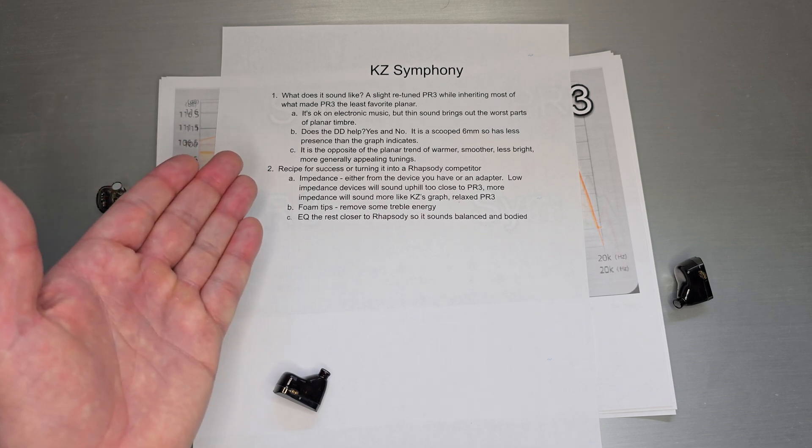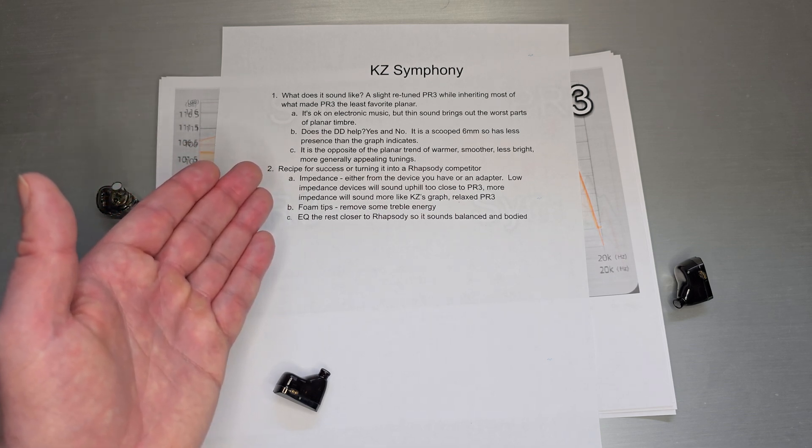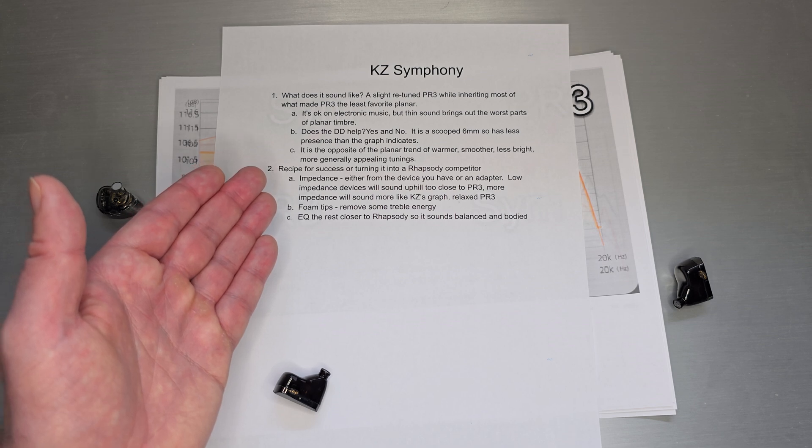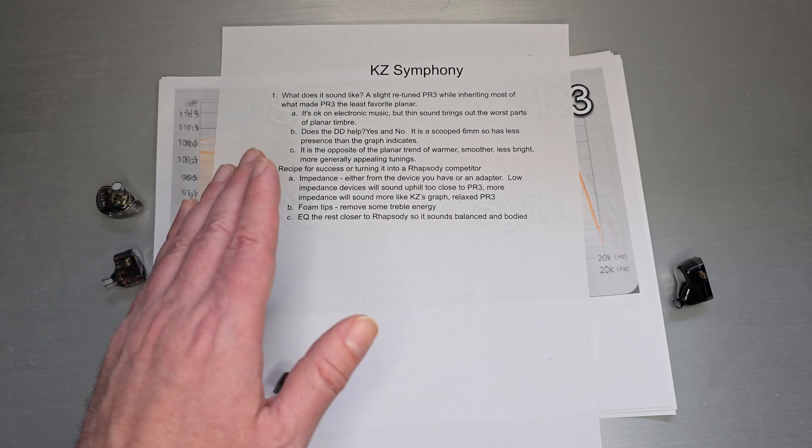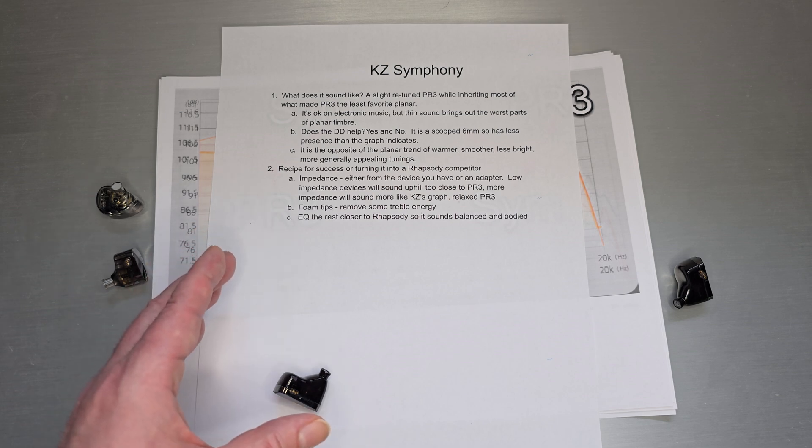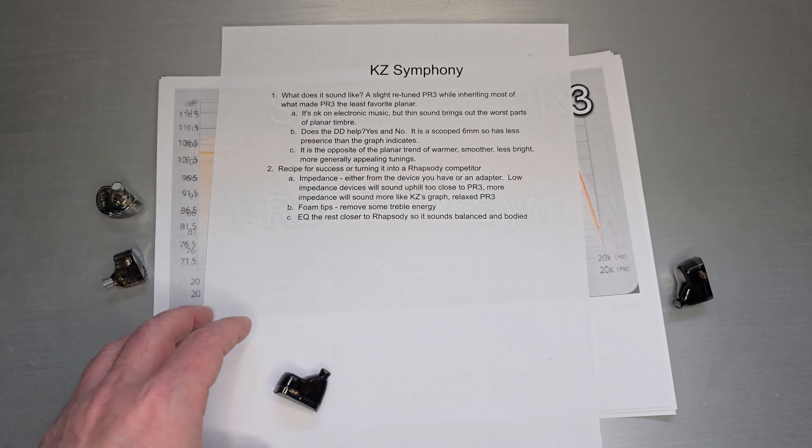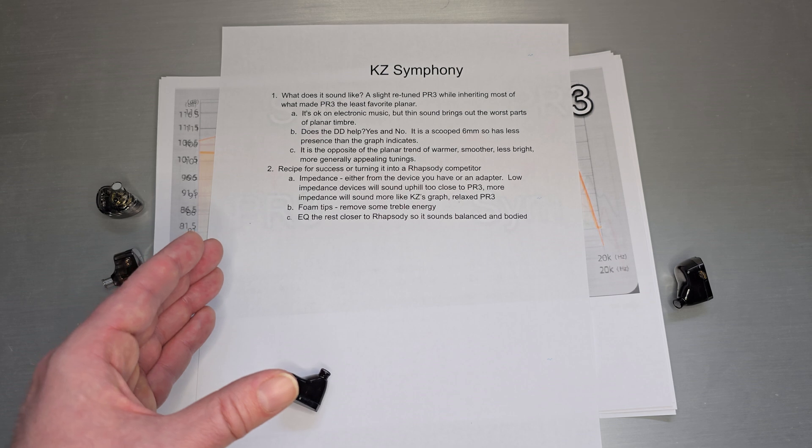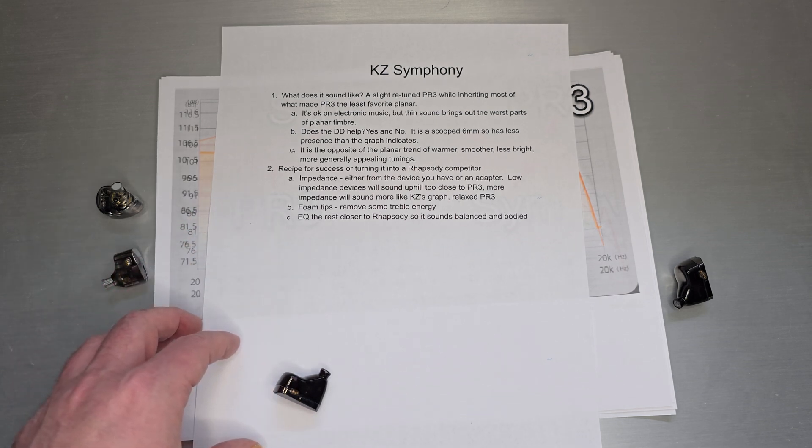So does the dynamic driver help? Yes and no. I think it helps a little bit. But it's a scooped 6mm dynamic driver, so it has less presence than the graph indicates, right? You always have to keep in mind with these graphs that we see so many 10mm dynamic drivers. Those have, you know, people have kind of a gut feeling of what that sounds like in their ear. 6mm isn't nearly as present as a 10mm. And even if you look at Rhapsody, that was a dual, I think, 8mm. Those have much more presence than a single 6mm. So yes, the graph looks huge and you think it's going to be a big booming set, but it's actually not because it's a 6mm dynamic driver. Not going to move nearly as much air as a 10mm or a dual 8mm.